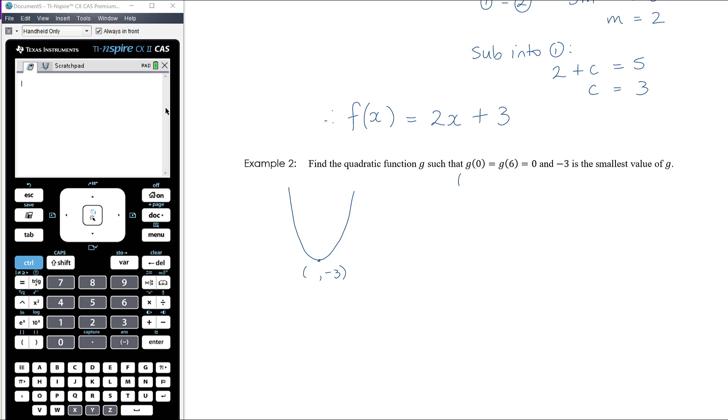Now the other thing we know is that g(0) equals 0, so that means we go through the point (0,0), and g(6) is also equal to 0. This is essentially two bits of information: g(0) equals 0 and g(6) also equals 0, which means g(0) equals g(6), so all three things are equal to each other, which is how it's been written.